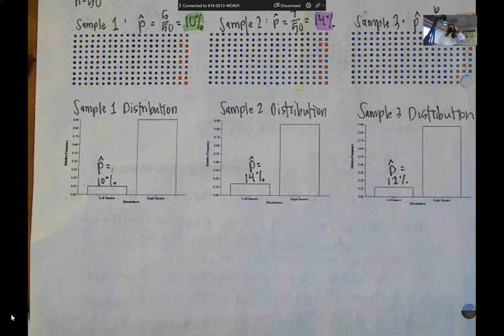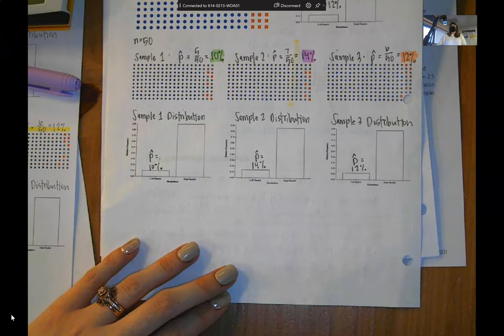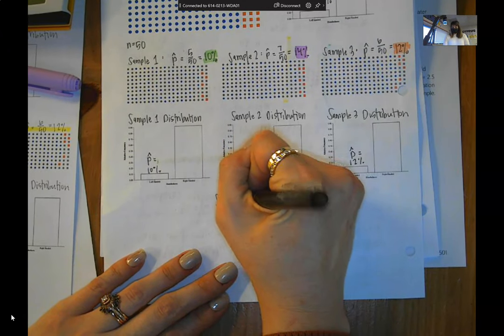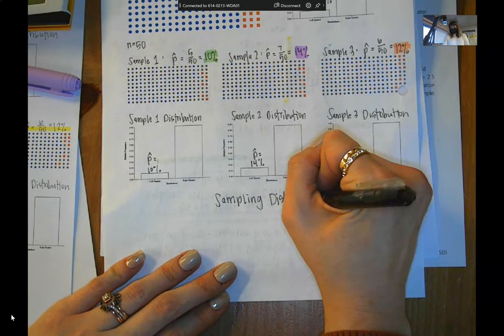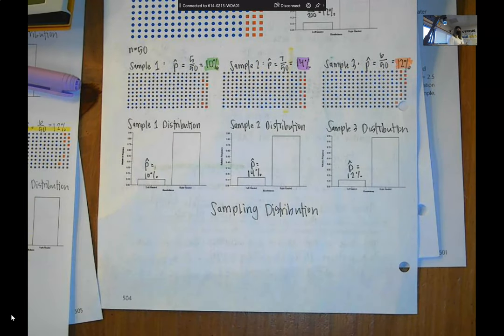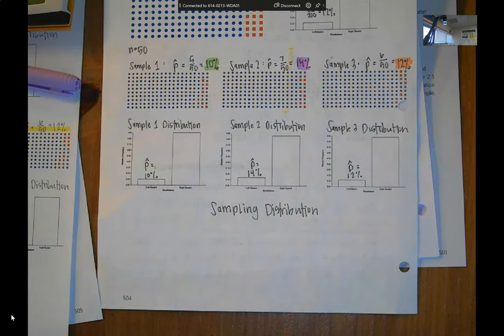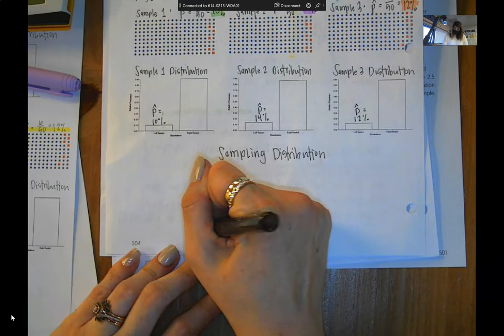Our population can be graphed using a bar chart and our individual samples can be graphed using bar charts. So this one is 10%. This one is 14%. This one is 12%. And remember these are all p-hats. So this now leads us into the sampling distribution for a proportion. We have three different ideas going on here. We have a population distribution, we have an individual sample distribution, and now we're going to put together all of our possible samples of size 50.